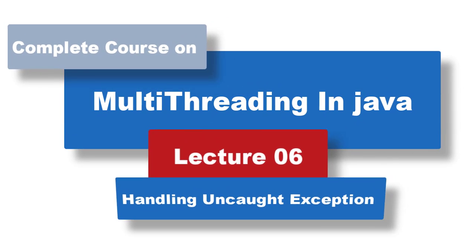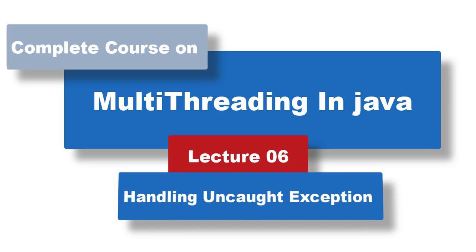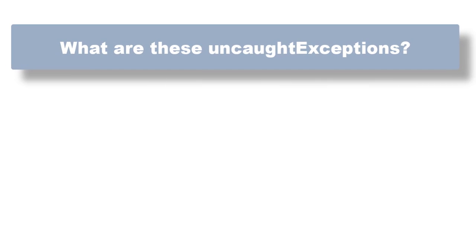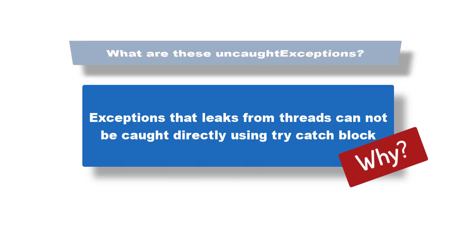Hi, I'm a programmer and you're watching Learn to Code. In this lecture we are going to learn about how to handle uncaught exceptions in Java threads. First, let's try to understand what these uncaught exceptions are. Exceptions that leak from a thread cannot be caught directly using a try-catch block — but why is that?